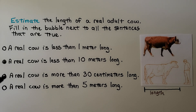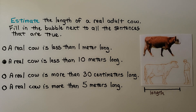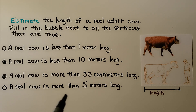How about: a real cow is more than 30 centimeters long? Do you remember how long a centimeter is? Do you think a real cow is more than 30 centimeters? If you said yes, you're right. Centimeters are very short, so a real cow is definitely more than 30 centimeters long.